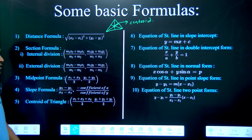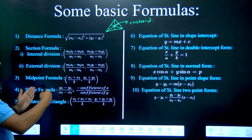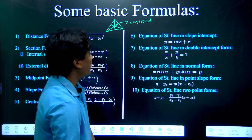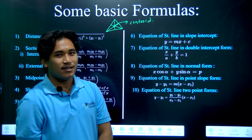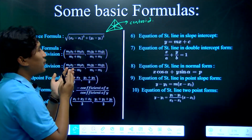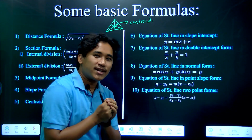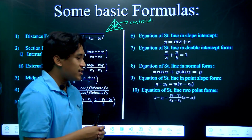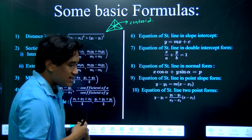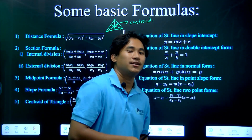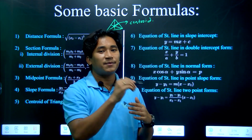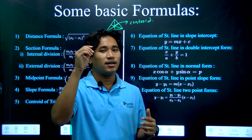We are going to cover the equation of a straight line in slope-intercept form. How do you identify the equation of a straight line in slope-intercept form? We use algebra and geometry shapes and terms to find this equation.